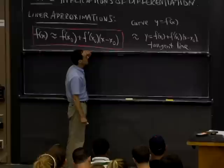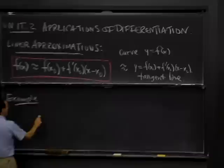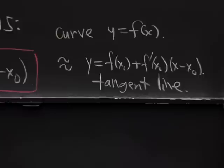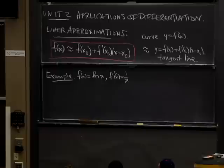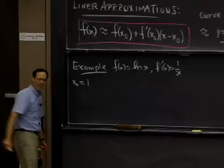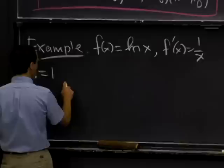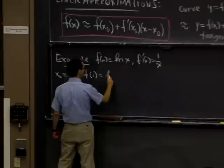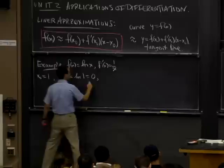Let's give an example. I'm going to take the function f(x) = log x, and its derivative is 1/x. Let's take the base point x₀ = 1 — that's pretty much the only place where we know the logarithm for sure. So f(x₀) is log(1), which is 0, and f'(x₀) is 1/1, which is 1.